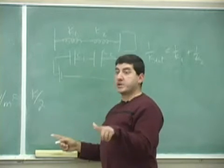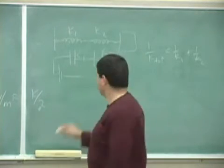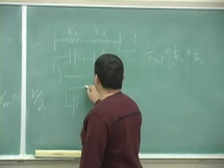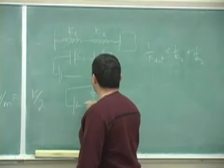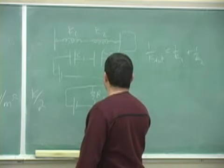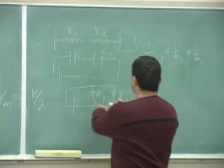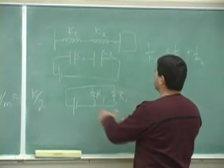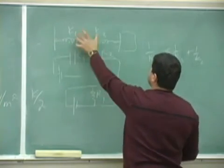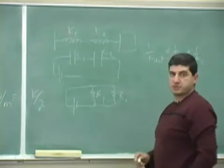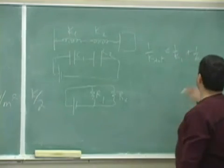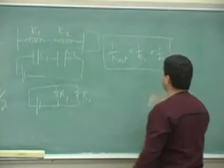It's the same way that capacitors add in series. And it's the same way that resistors add in parallel. If you have two resistors, resistors add in parallel. Resistors in parallel diminish each other. Capacitors in series diminish each other. Springs in series diminish each other. Okay? So this is the formula then.